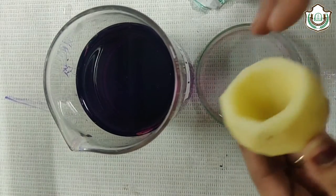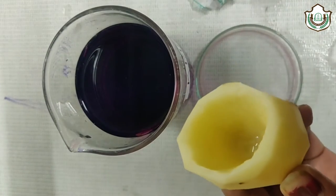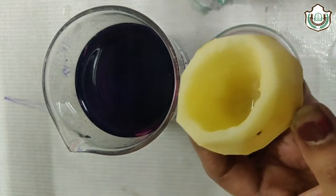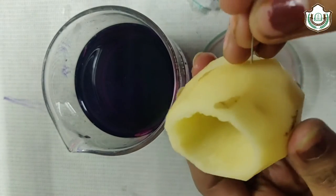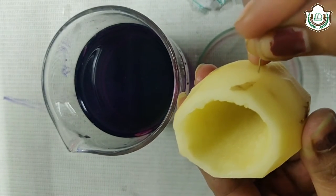Now our potato osmometer is ready. Now with the help of oil pen, we will mark the level of sucrose.